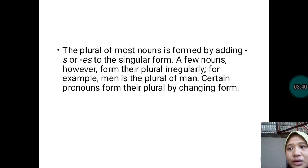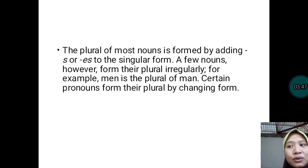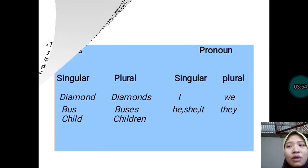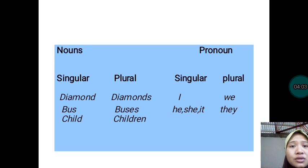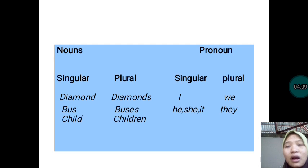Pronouns also change forms when we make them plural. Here are some examples of singular and plural forms of nouns and pronouns. The given singular forms of nouns are diamond, bass, and child. Their plural forms are diamonds, bass, and children.